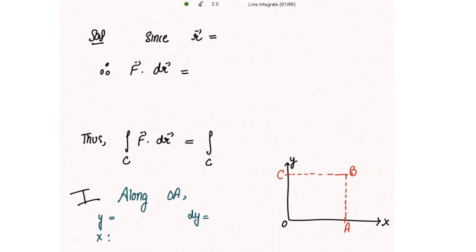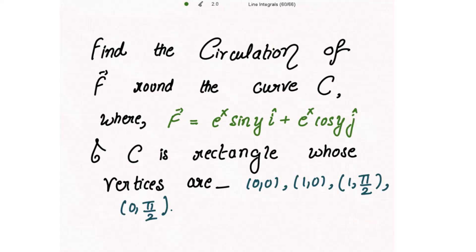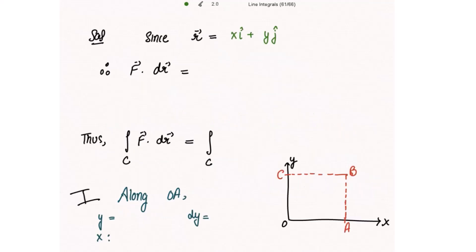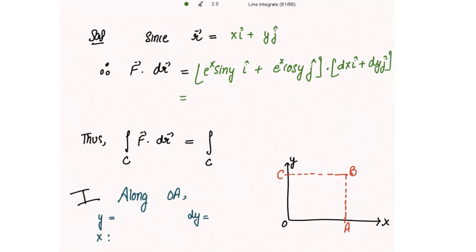Because this is the xy plane, we take dr vector as dx i-cap plus dy j-cap. F vector is given as e to the power x sine y i-cap plus e to the power x cos y j-cap. Taking the dot product of F vector with dr vector, we get e to the power x sine y dx plus e to the power x cos y dy. This is the circulation of the vector point function.